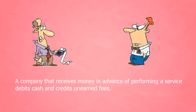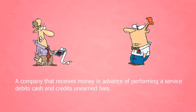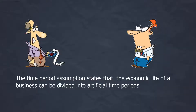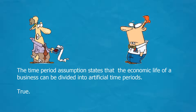A company that receives money in advance of performing a service debits cash and credits unearned fees. True. The time period assumption states that the economic life of a business can be divided into artificial time periods. True.